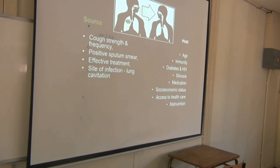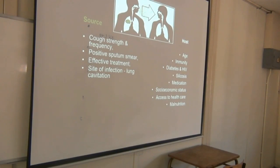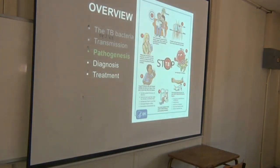If the host is on any immunosuppression medication, the risks are higher. Socioeconomic status matters — if you stay in a small house and are in contact with TB people, your access to healthcare is limited. Malnutrition also increases your risk.